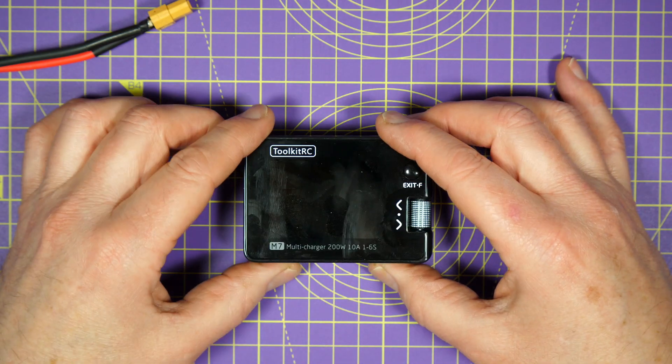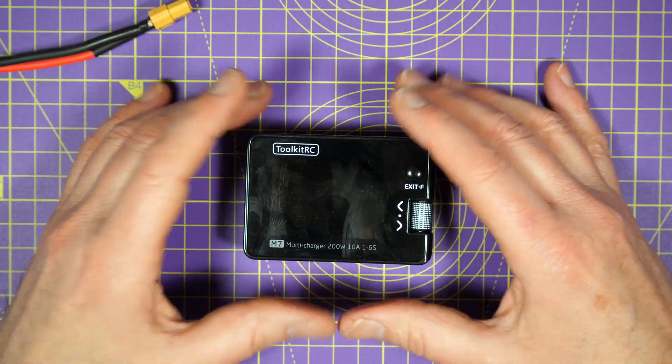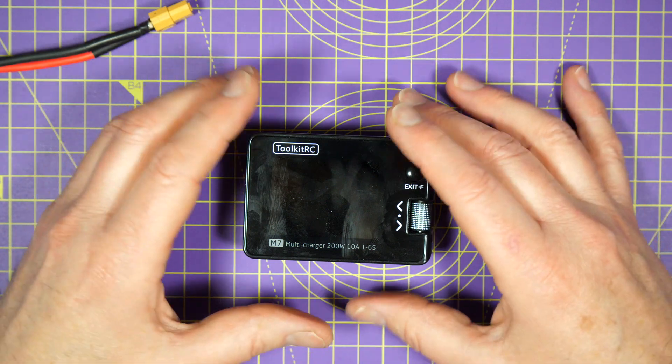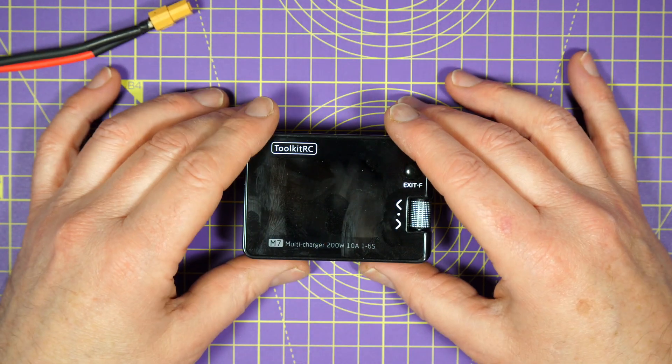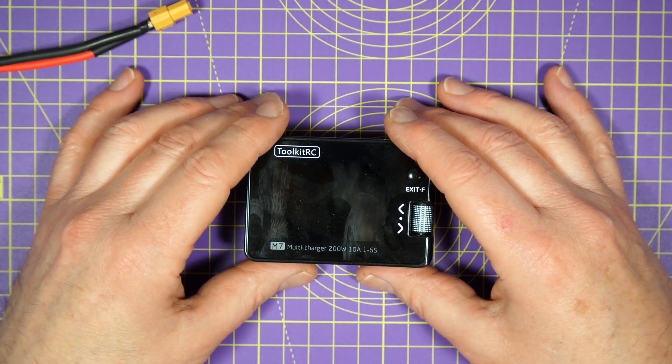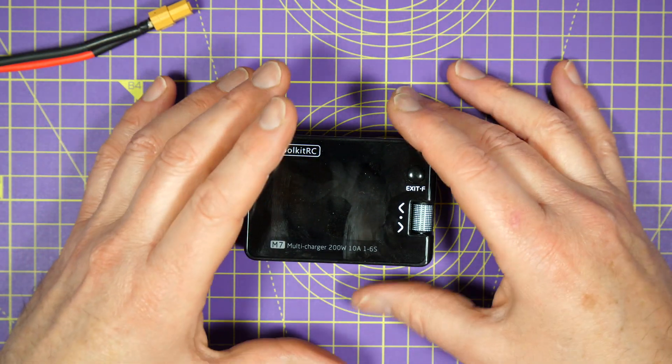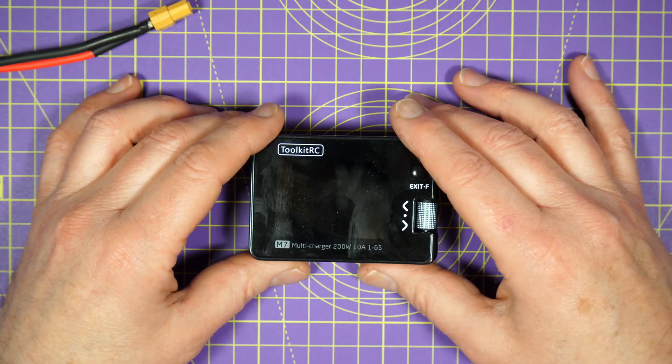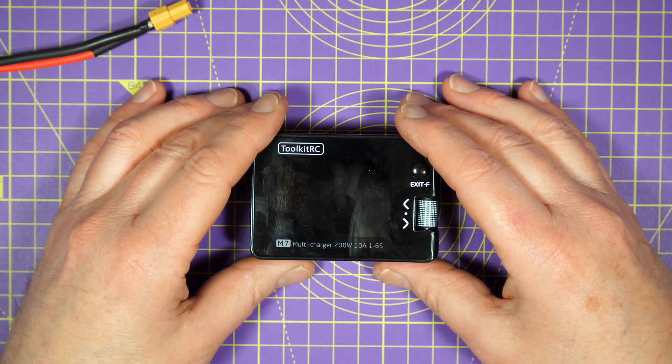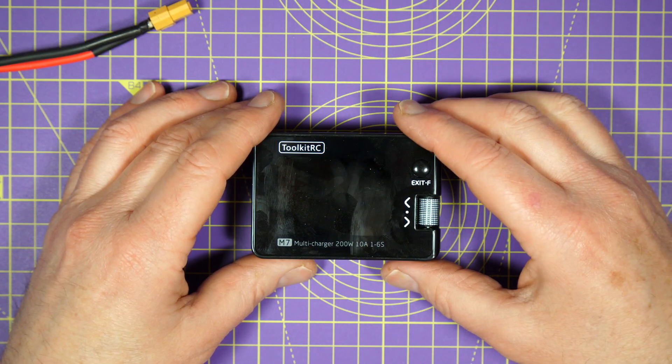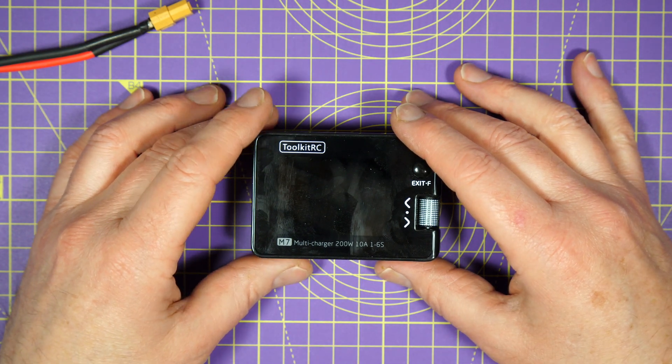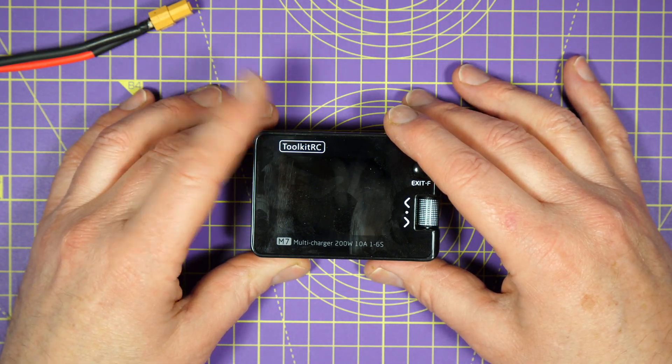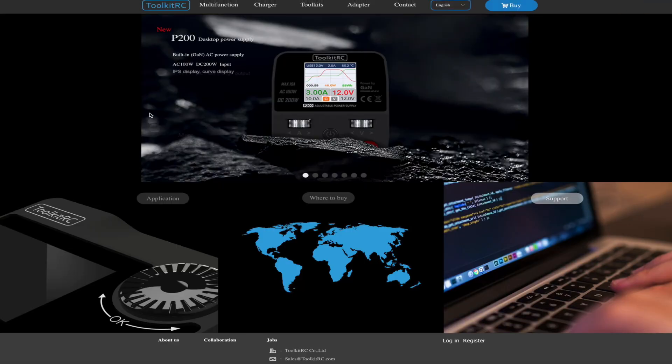So Toolkit RC have done it yet again. This has got all the same functionalities as the M6 multifunction charger, but everything has been improved—the user interface, the buttons—and it delivers 33% more power, all for the same price of around £30, that's sort of around $40. I'll leave some links in the description below so you can check out the latest prices, availability, and discounts. This is on pre-order at Banggood at the moment. Do visit the Toolkit RC website to check out their awesome range of products.